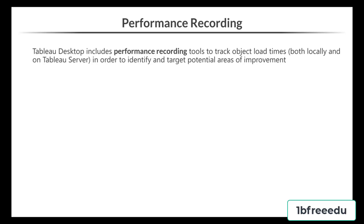Performance recording can be done in both Desktop and Server. To eliminate potential external factors, start with desktop performance recording using a local source. Published sources can add 5 to 10 seconds of additional lag time for a fully rendered dashboard depending on latency and connection type. Additionally, a local source is needed to examine queries generated in SQL — published sources come out in HTML format. In Tableau Desktop, go to Help > Settings and Performance > Start Performance Recording.